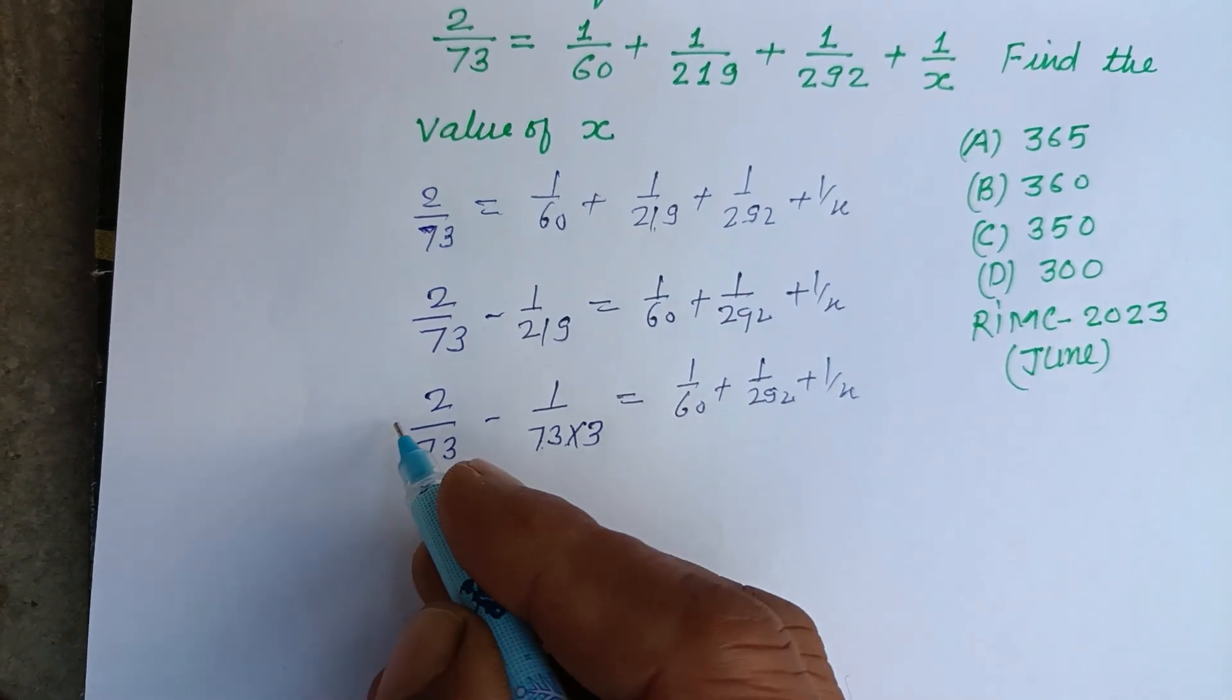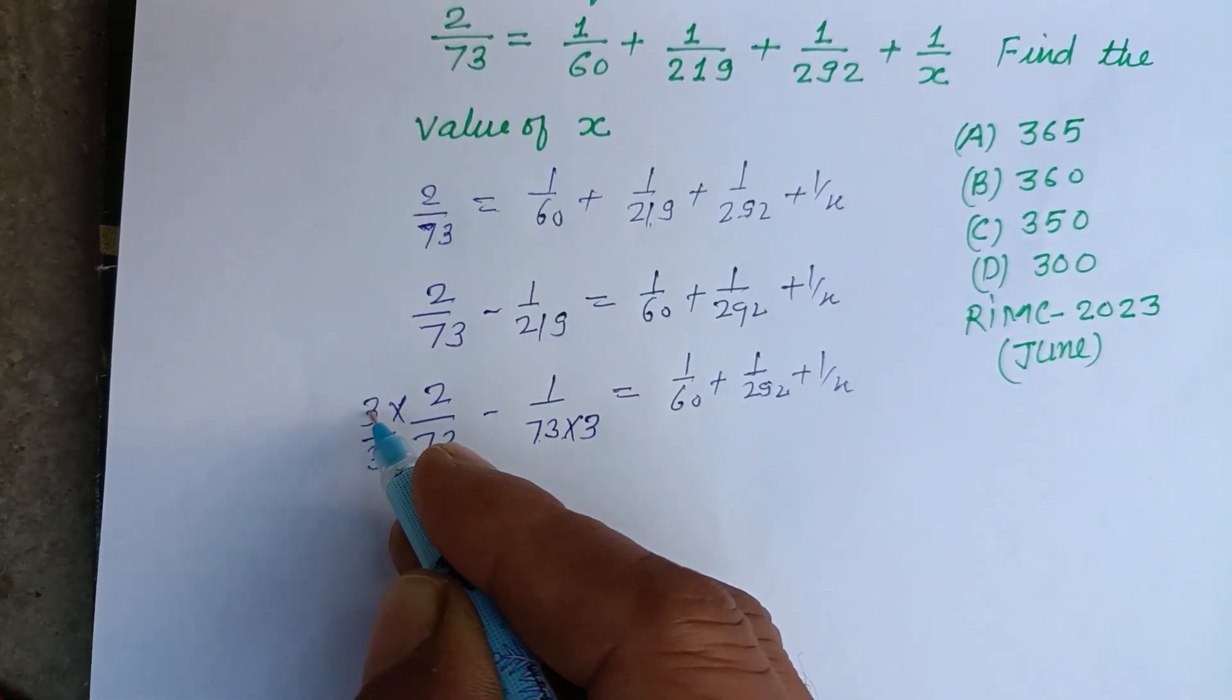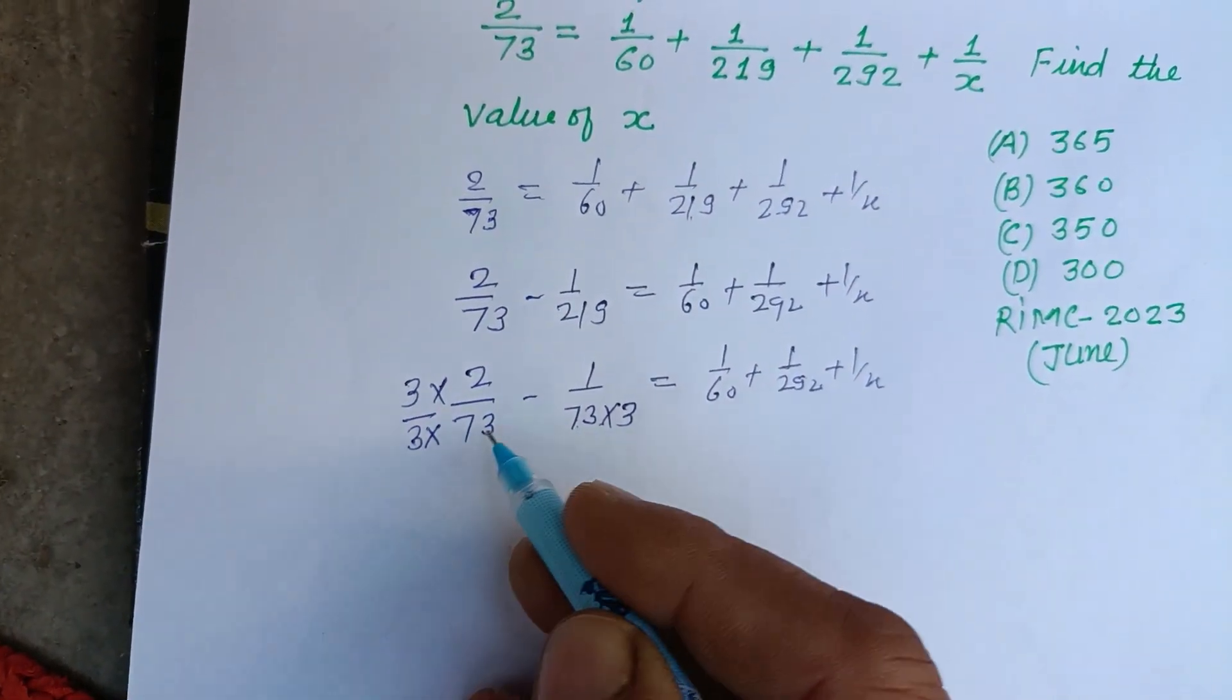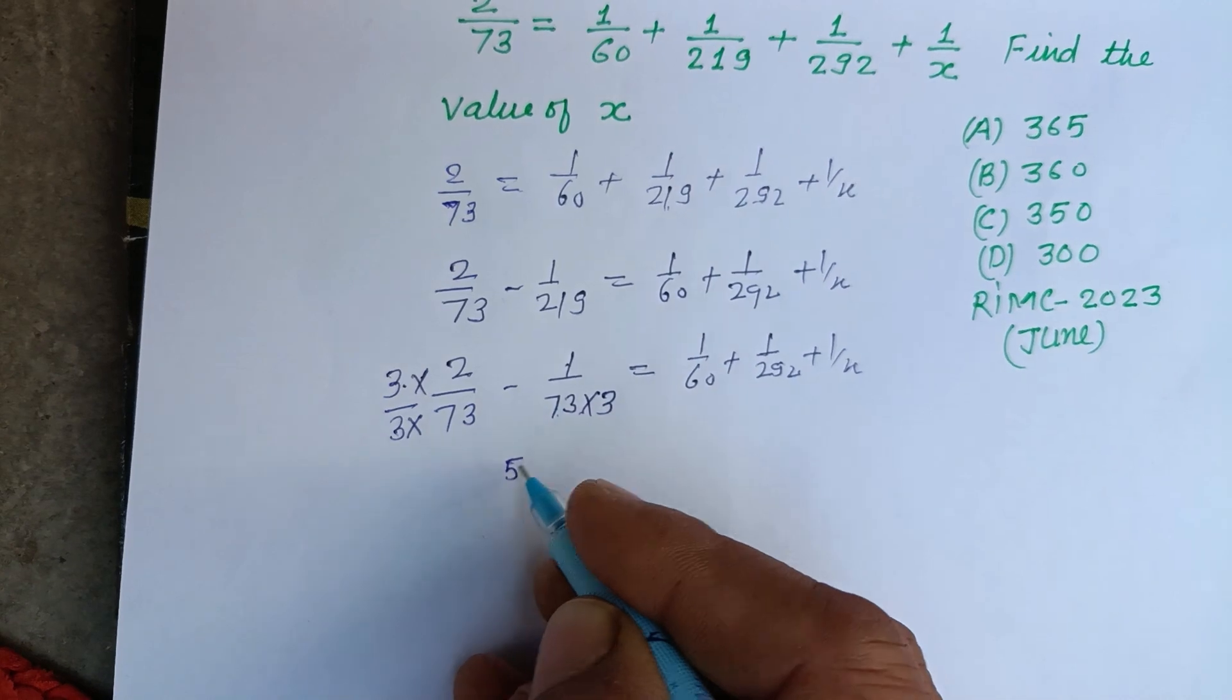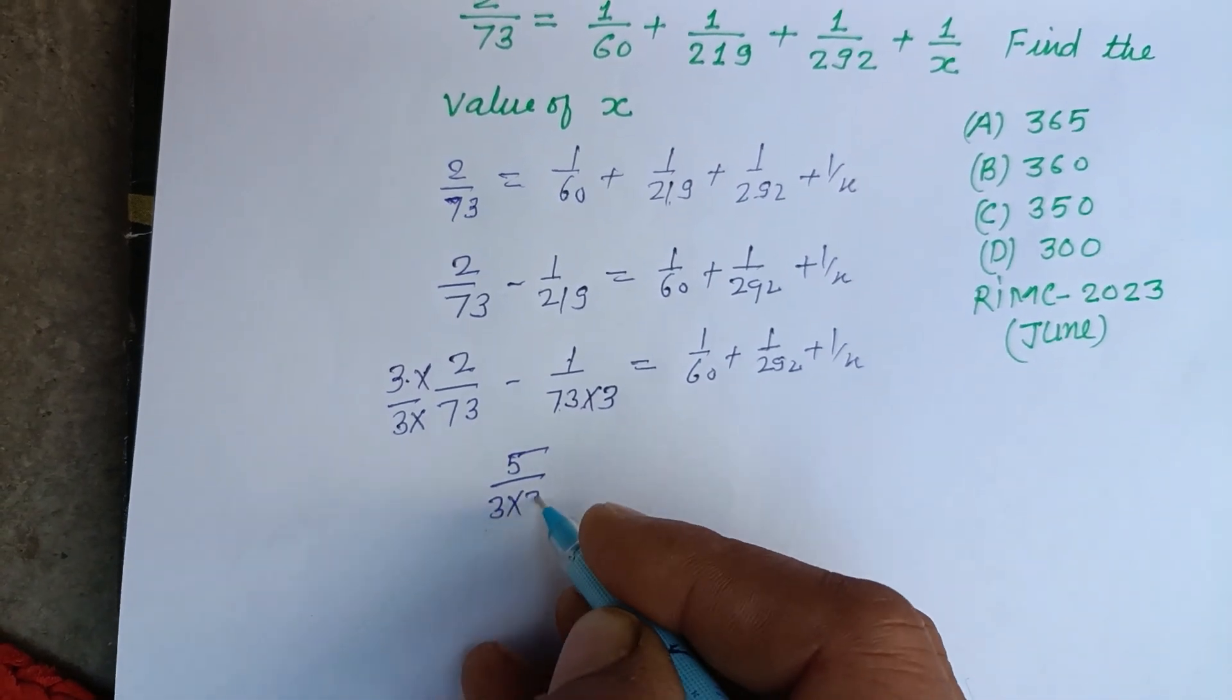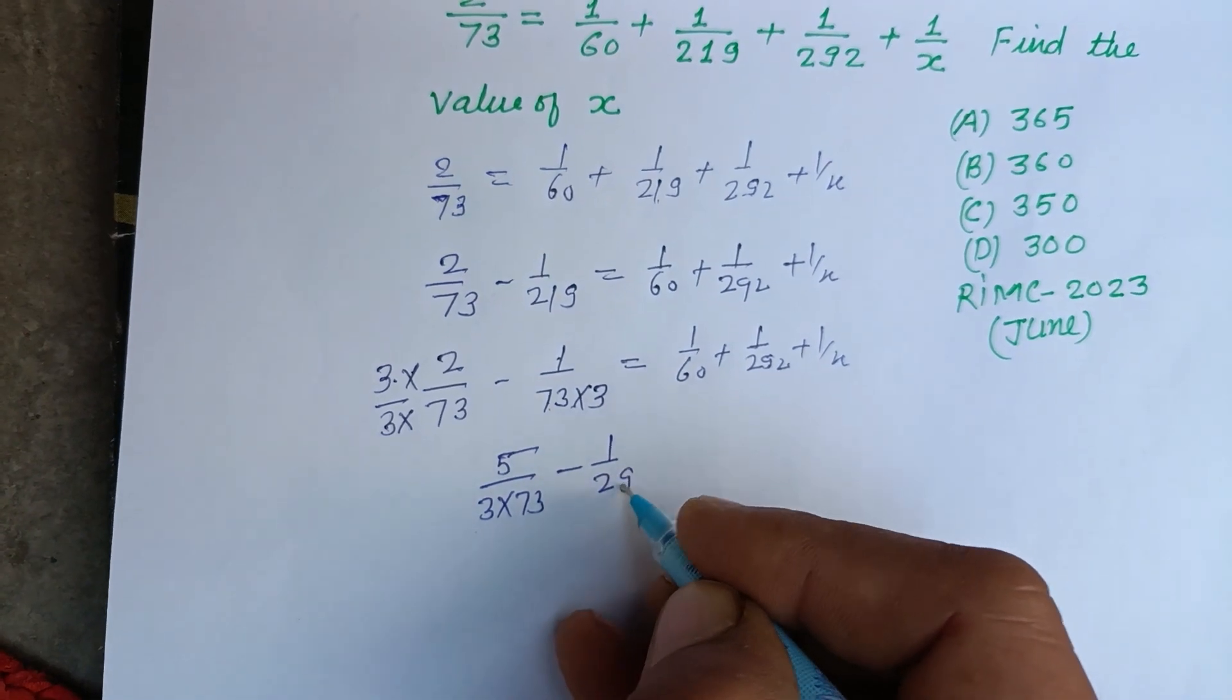We multiply by 3 in numerator and denominator so the denominator becomes the same: 6/(3×73) - 1/(3×73) = 5/(3×73). Now we bring this towards 292: 5/(3×73) = 1/60 + 1/292 + 1/x.